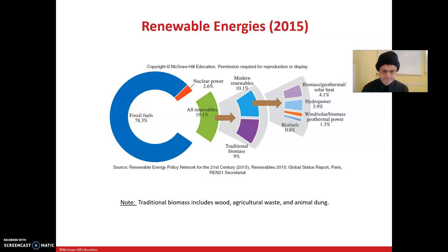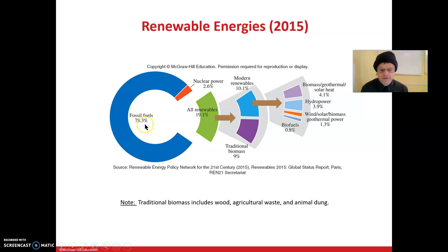This picture shows what fuels are used to create energy consumption: 78.3% of energy consumption originated from fossil fuels, while a small fraction — about 0.8% — came from biofuels in 2015, so roughly one percent.